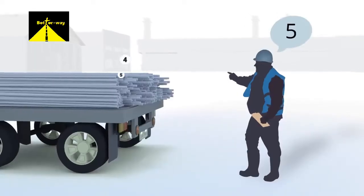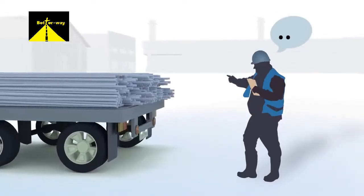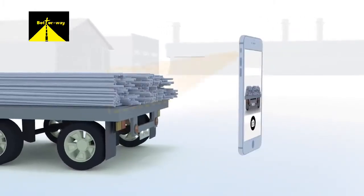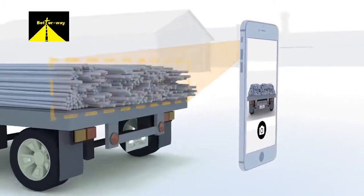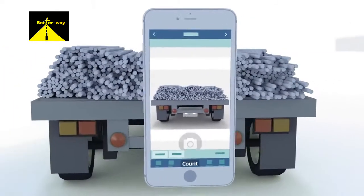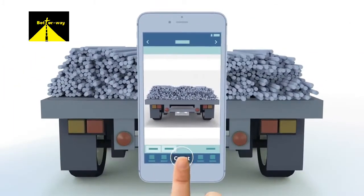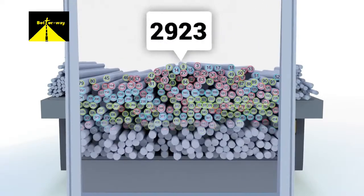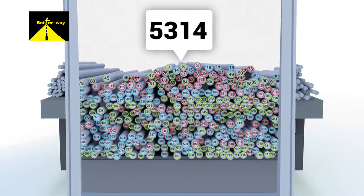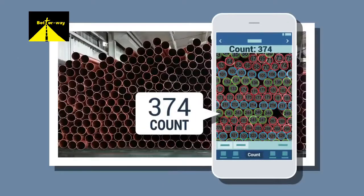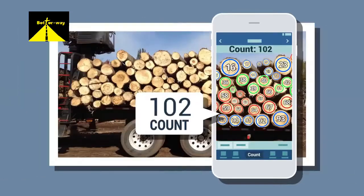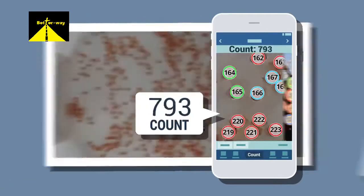Want to count your items faster? The Count Things from Photos app counts objects at the touch of a button. To ensure accuracy, we provide counting templates for many types of items.